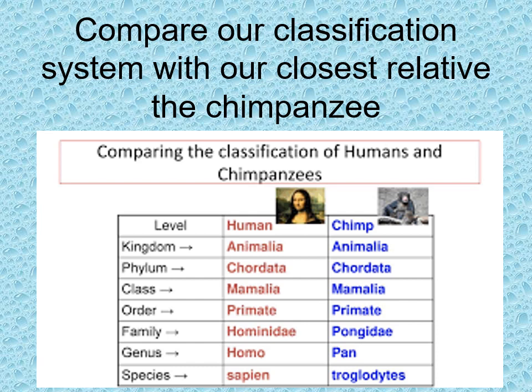Compare our classification system with our closest relative, the chimpanzee. We share a kingdom — we're both animals. We share a phylum — we're both Chordata, we both have spinal cords. We share a class — we're both mammals. And we share our order — primate. When we start to have differences is in family, and the final two categories, genus and species, are individual to us.